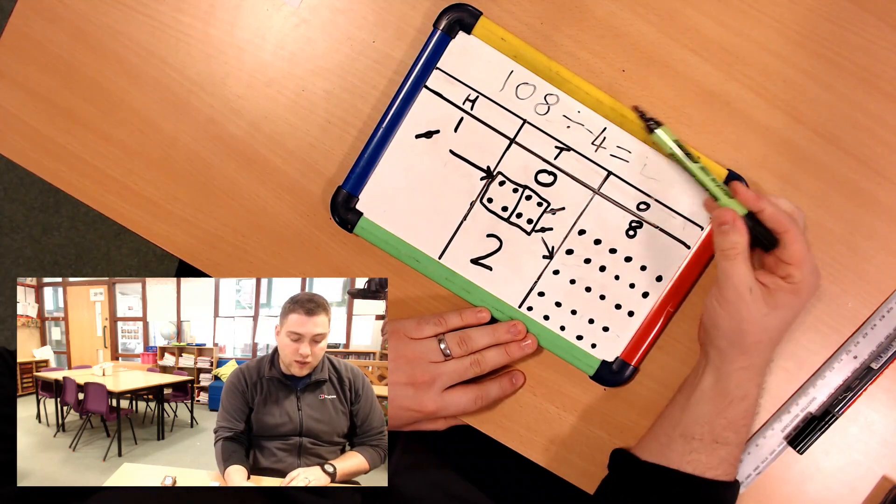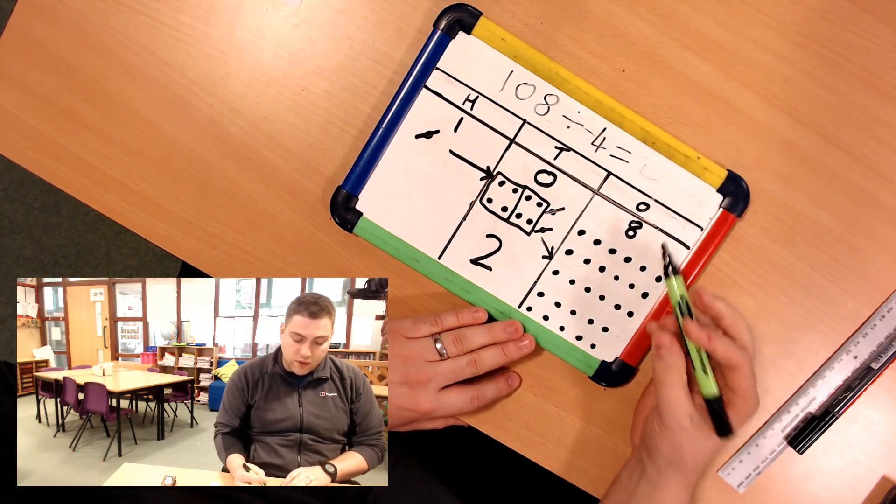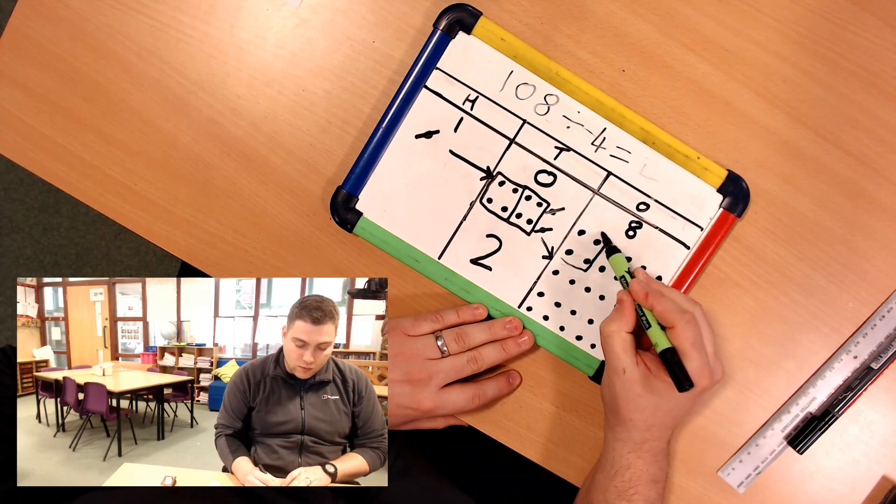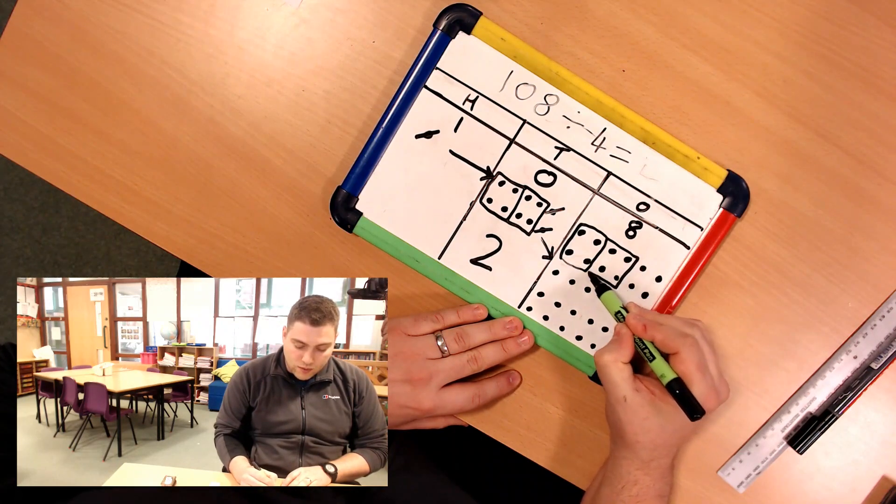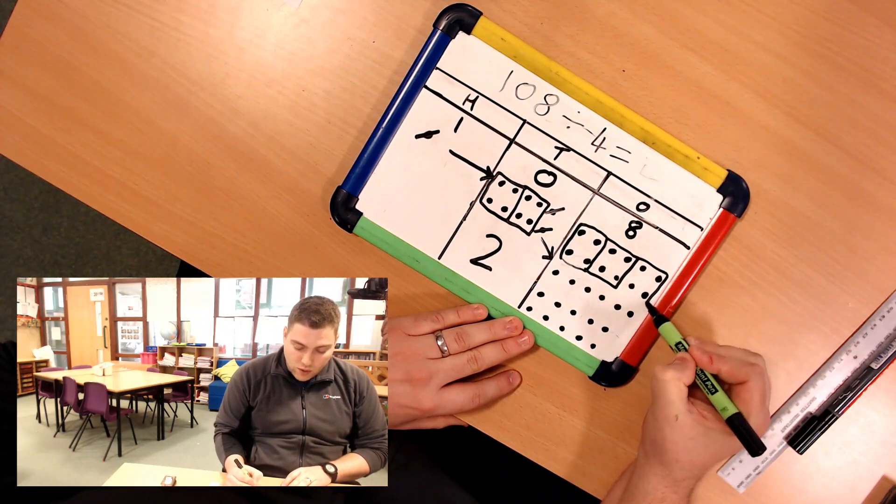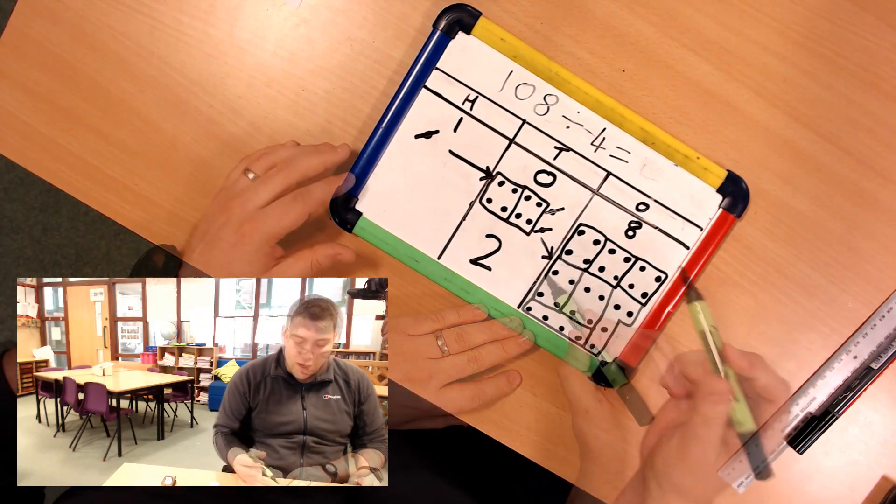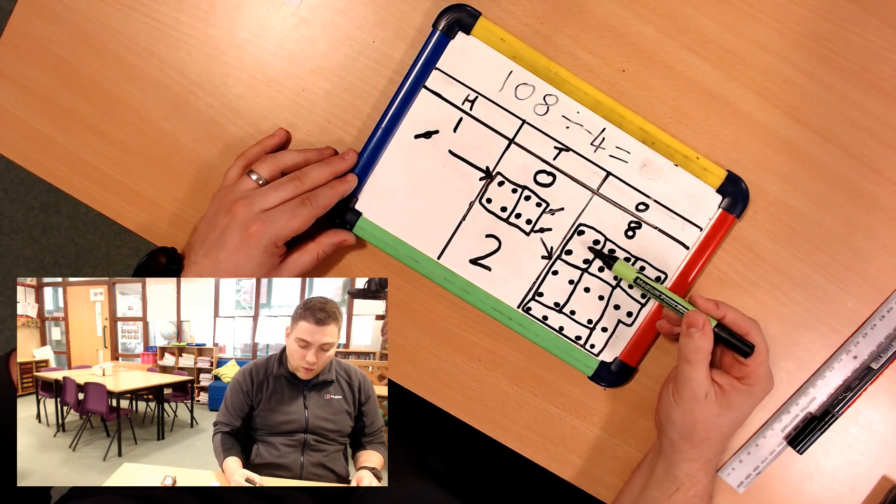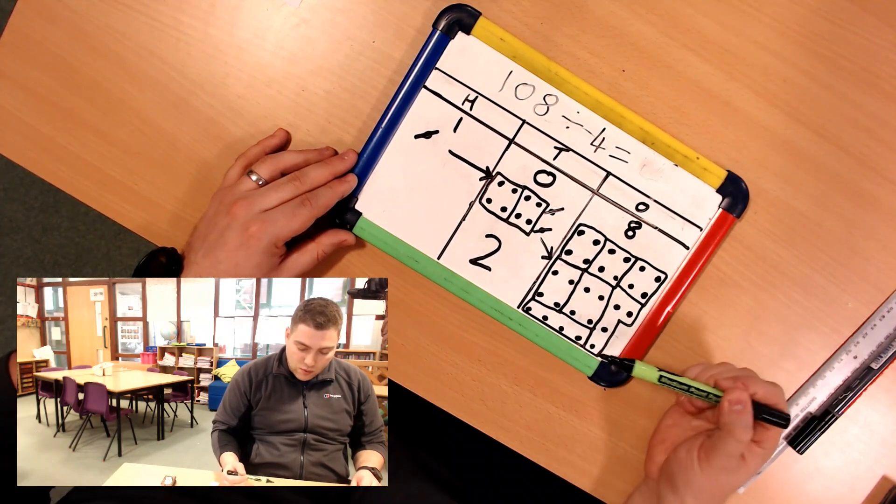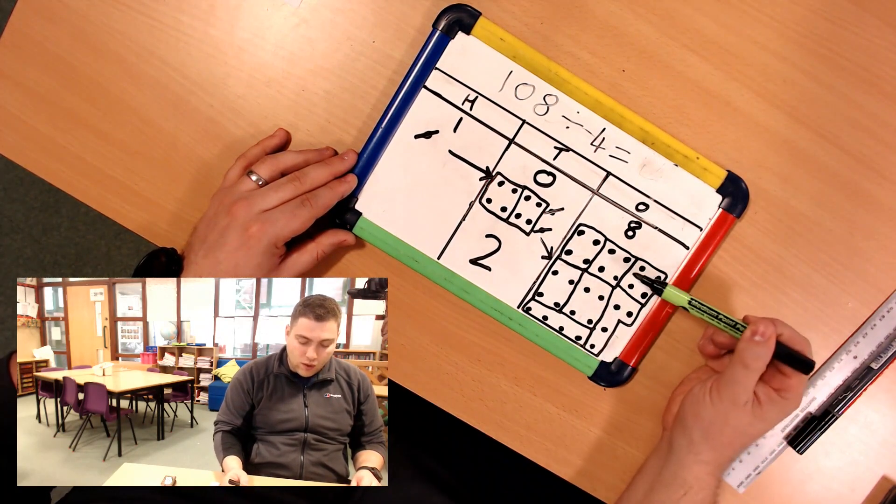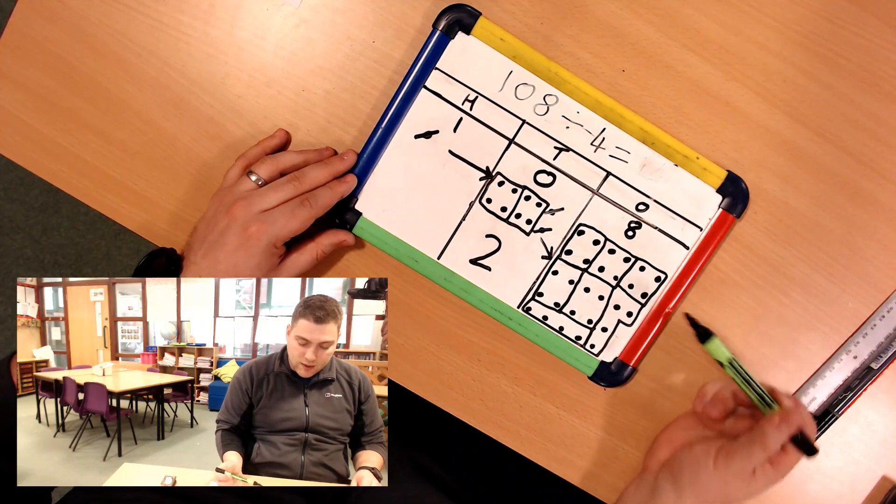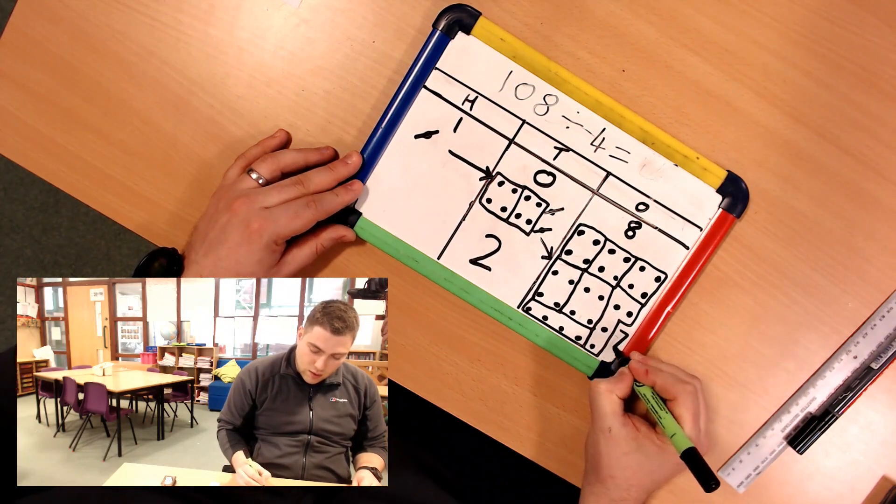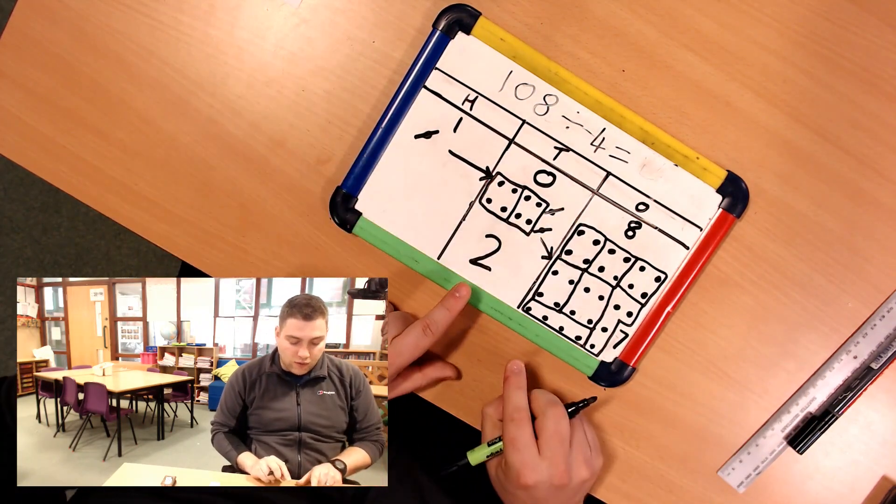Again, my divisor is 4 so I need to make equal groups of 4. 1 group of 4, 2 groups of 4, 3 groups of 4. Now I'm going to count up how many equal groups of 4 I've made. I've got 1 equal group of 4, 2, 3, 4, 5, 6, and 7. So 108 divided by 4 is 27.